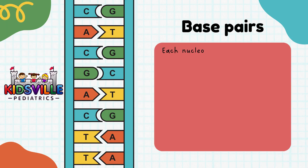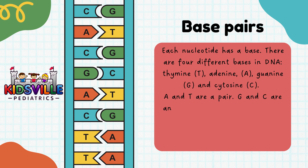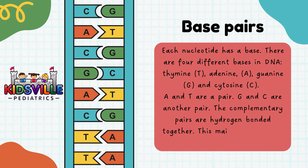Each nucleotide has a base. There are four different bases in DNA: thymine (T), adenine (A), guanine (G), and cytosine (C). A and T are a pair, and G and C are another pair. The complementary pairs are hydrogen bonded together, which maintains the DNA structure.